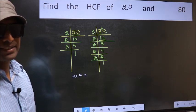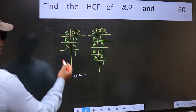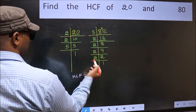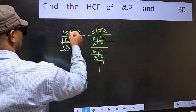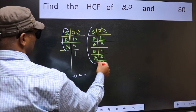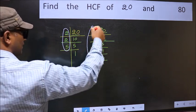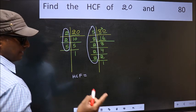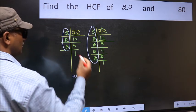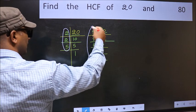Therefore our HCF is the product of the numbers which should be present in these two places, that is here and also here. Here and here.